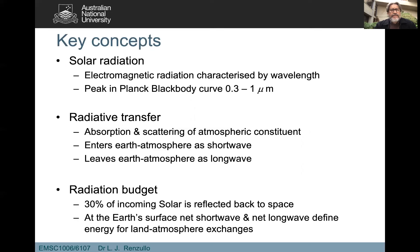The key concepts from today: solar radiation comes in as electromagnetic radiation over the 0.3 to about 1 micron shortwave range. As it propagates through the atmosphere it interacts with constituents — absorbed, scattered, reflected, and emitted. It comes in as shortwave and leaves as longwave, and 30 percent of what comes in is reflected back into space. At the Earth's surface, net radiation equals net shortwave plus net longwave, and that helps define land-atmosphere interactions — the topic of our next lecture. Thank you for your time and I'll see you next time.